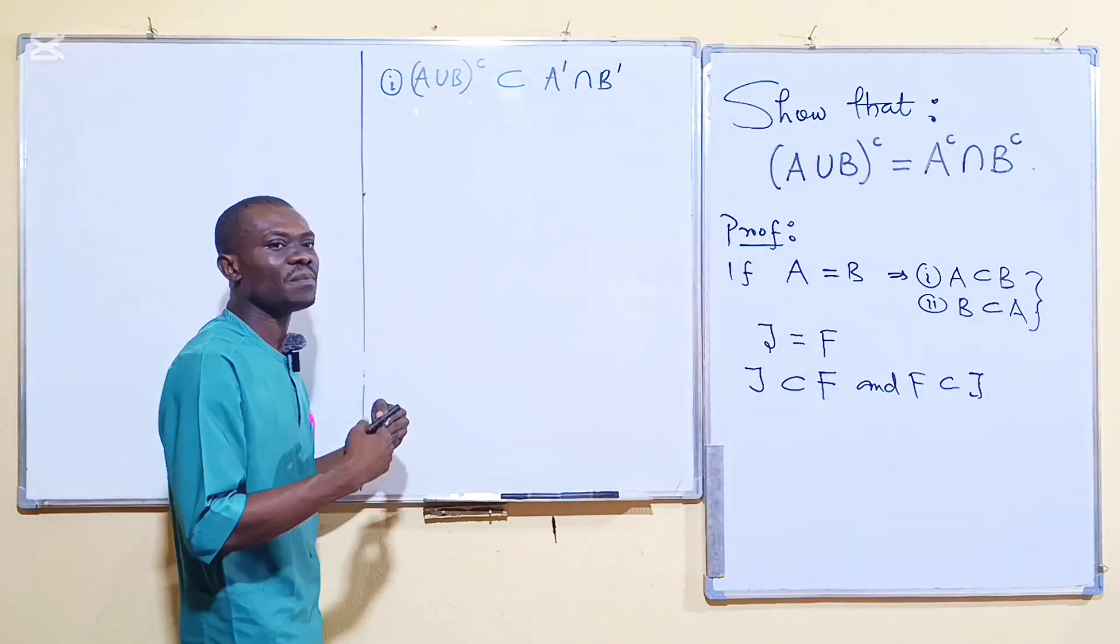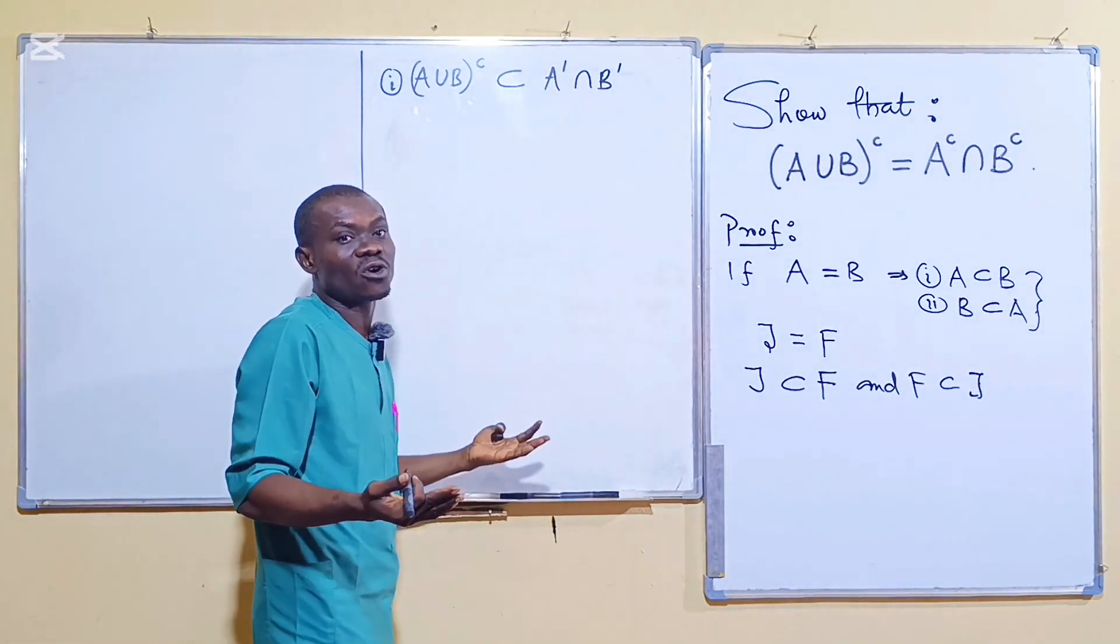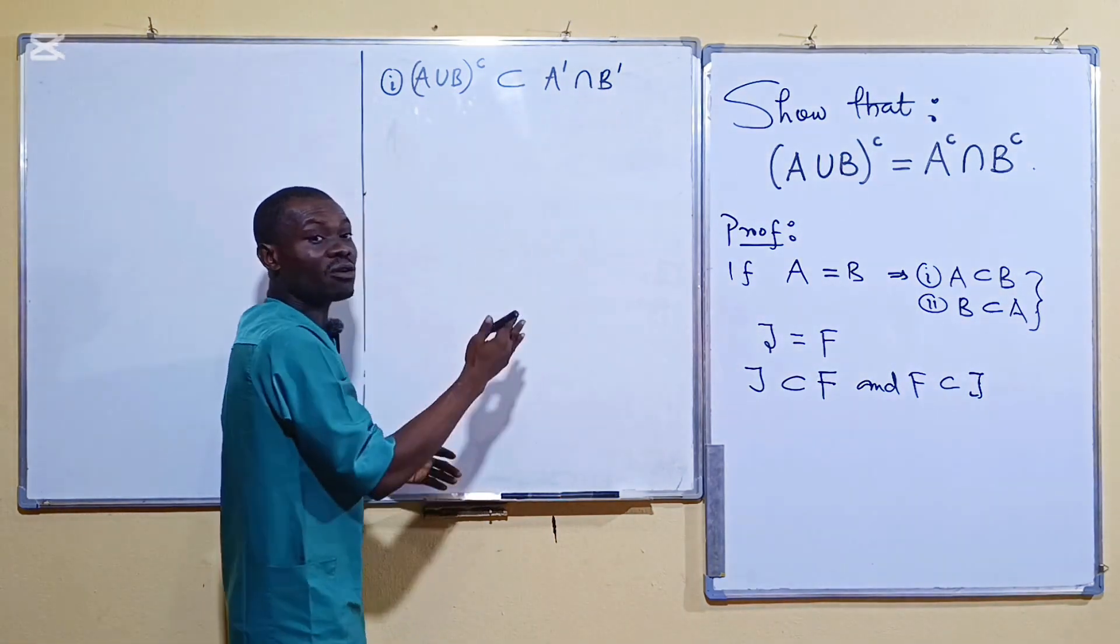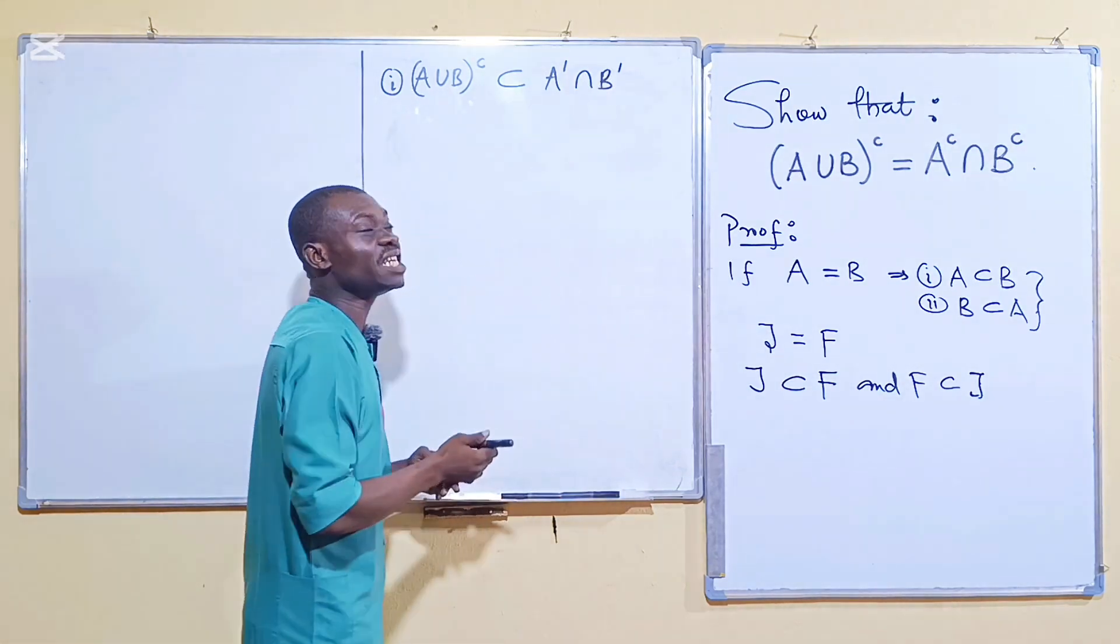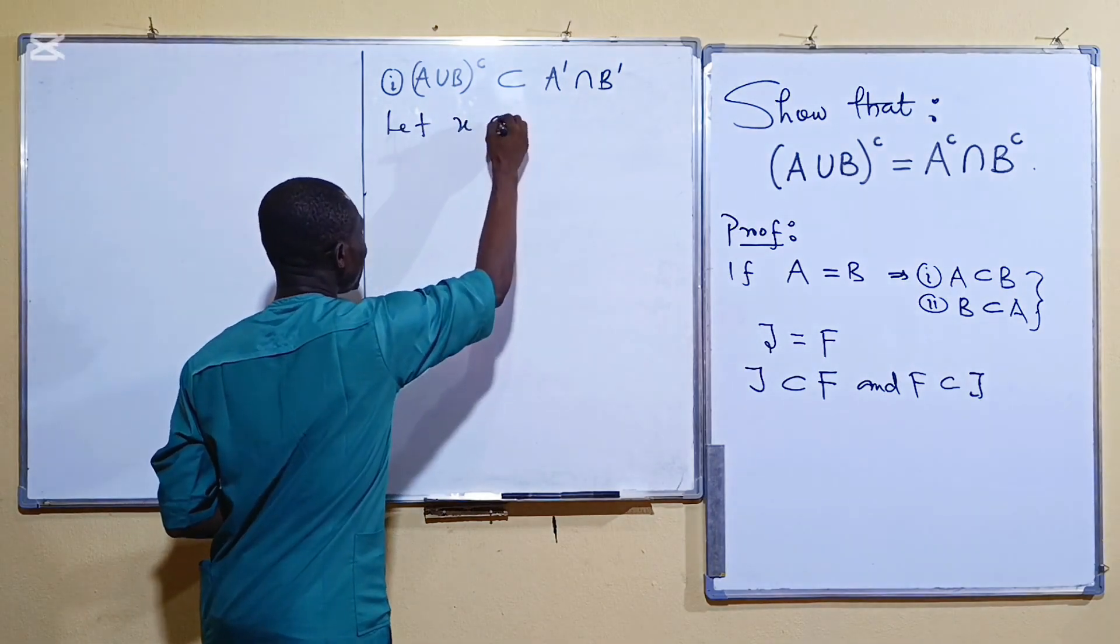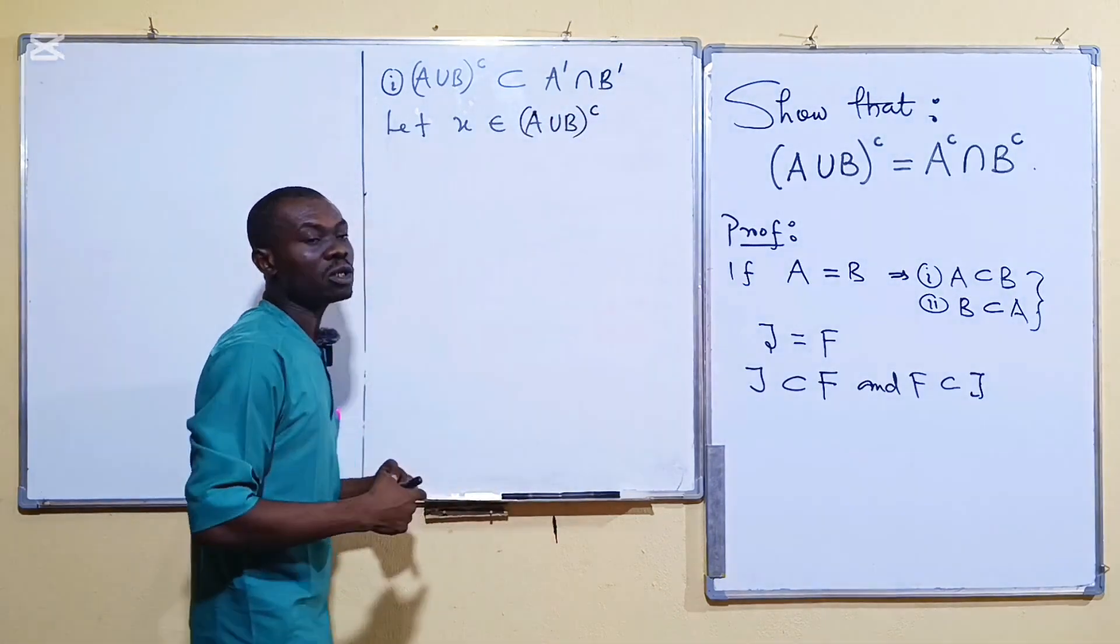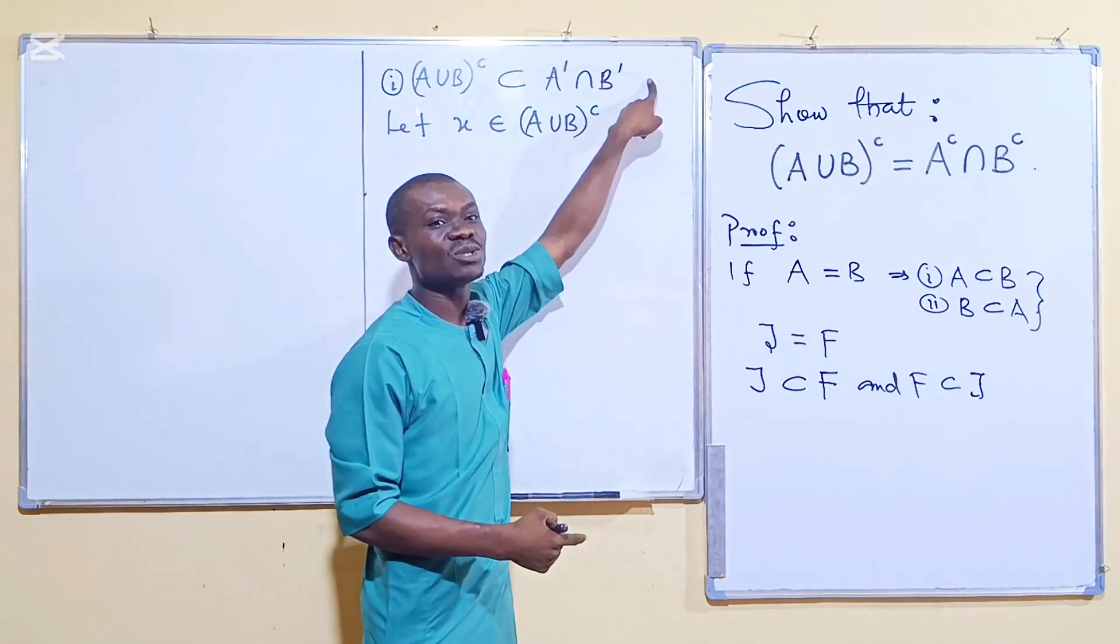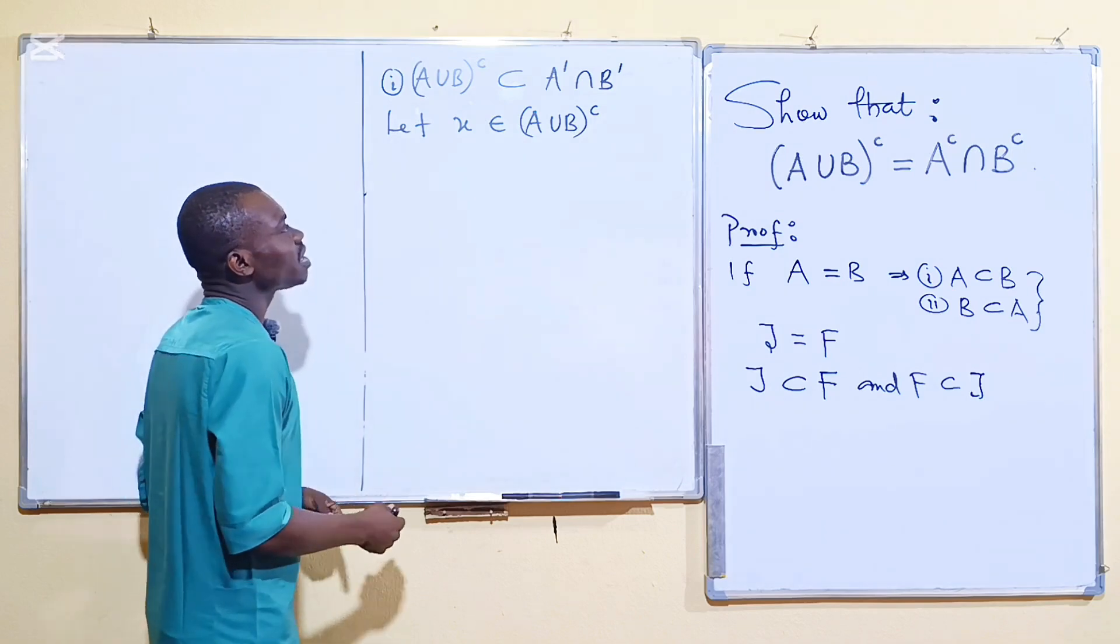So what do I do to show that a set is a subset of another? It's very simple. Pick an arbitrary element in the set and show that it is here. Because what is the meaning of containment? You are saying that every element here is here. So now for us to prove that we just pick an arbitrary element and then show that it is contained here. So let our X be in A union B complement and so we want to show that this X that we have picked from this guy is actually here. So if we achieve that then we have shown that it is contained there.